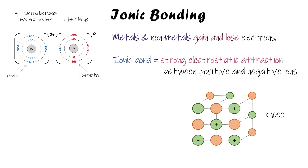This happens thousands and thousands of times over with thousands of atoms, and there's that attraction between positive and negative ions — that is your ionic bond, that strong electrostatic attraction. This structure where you've got thousands of ions repeating is called a giant ionic lattice.